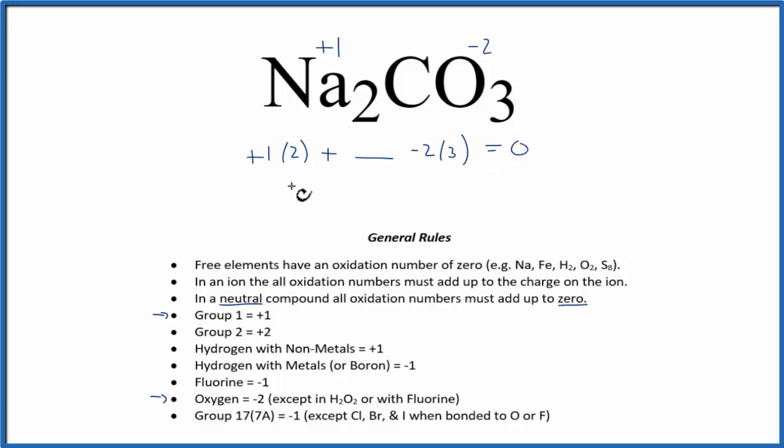So we have 2 plus some number minus 6 equals zero. Well 2 plus 4, that's 6 minus 6 equals zero. So the oxidation number on carbon is plus 4.